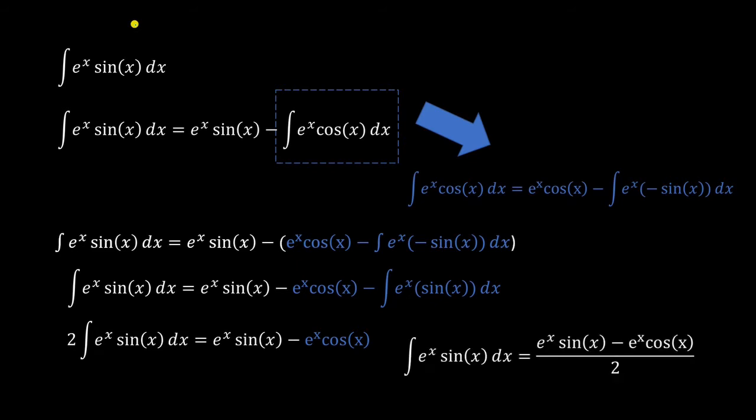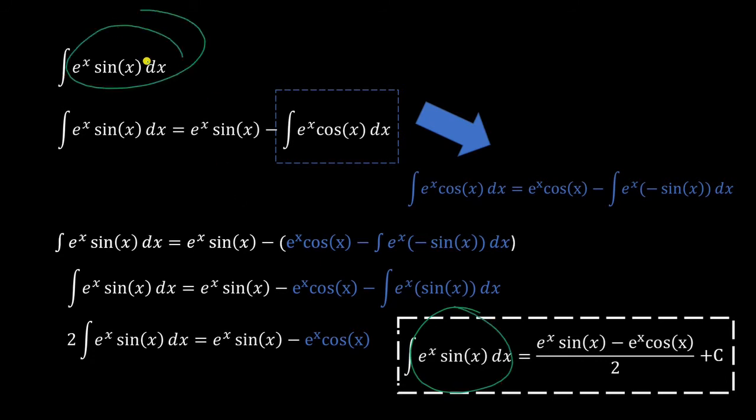And somehow, out of nowhere, we have our answer. Remember, this is what we wanted to find in the first place. We just add a plus c on the end and we're done. So what we did there was integration by parts twice and then solving for the integral we wanted by treating it like a variable.